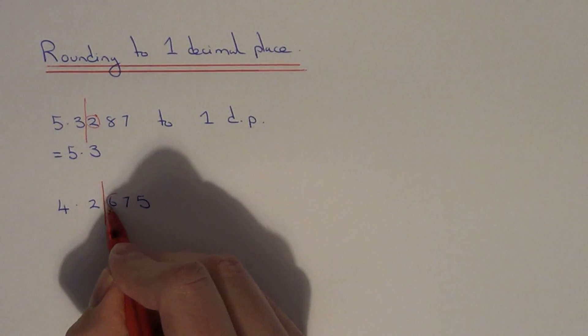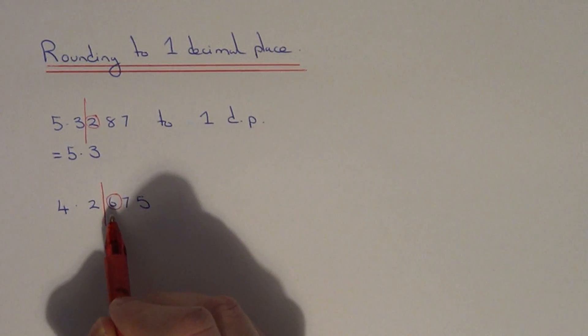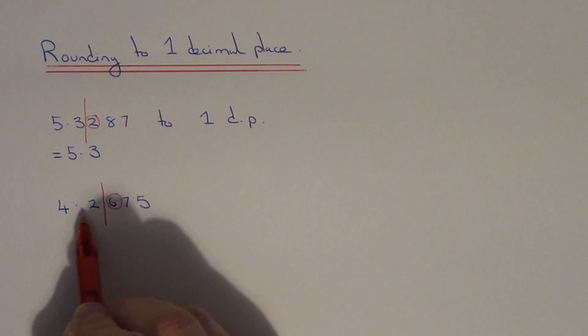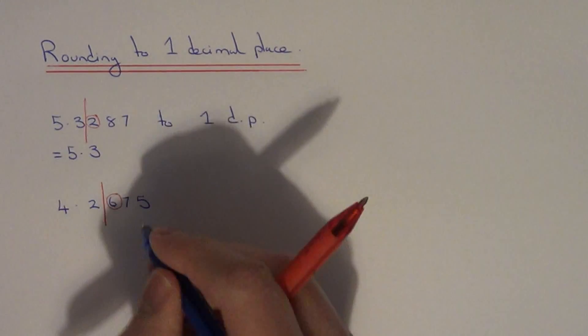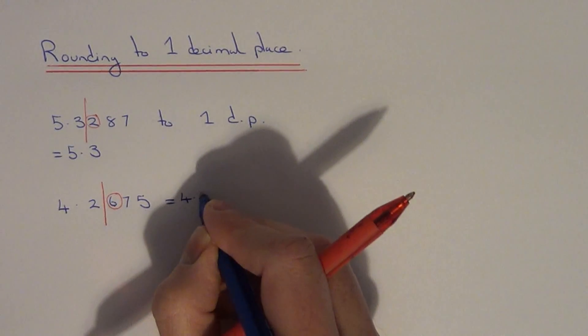Look at the number after the line. Since 6 is 5 or above, we round the number up. It will be close to 4.3, so that's our answer: 4.3.